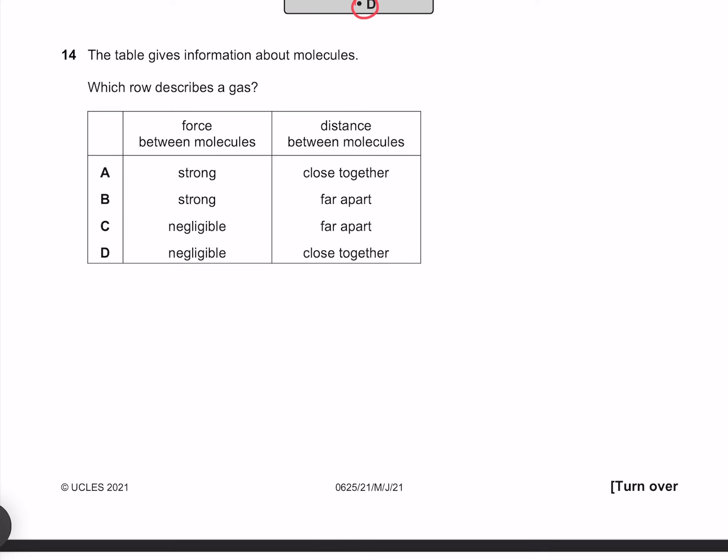The table gives information about molecules. Which row describes a gas? In a gas the force between the molecules is negligible, and the distance between molecules is far apart. Therefore our answer must be C.